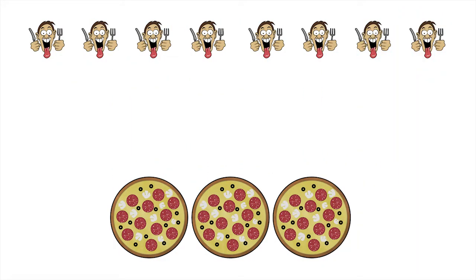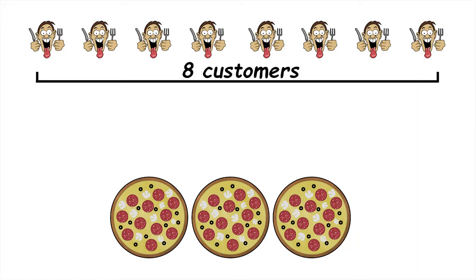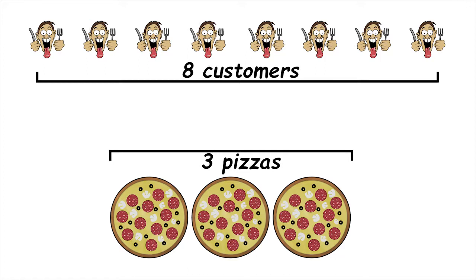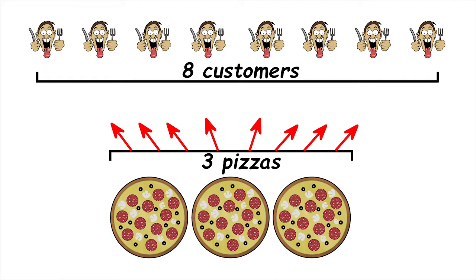Let's see if we can help Peppy. There are 8 customers and 3 pizzas. We want to divide the pizzas up into equal sized slices and share them out so each customer gets the same amount of pizza.